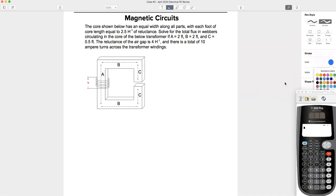So the question says, the core shown below has equal widths along all parts, with each foot of core length equal to 2.5 inverse henries. So for every foot in your core, we've got a reluctance of 2.5 inverse henries. Question asks, solve for the total flux in Webers circulating in the core.